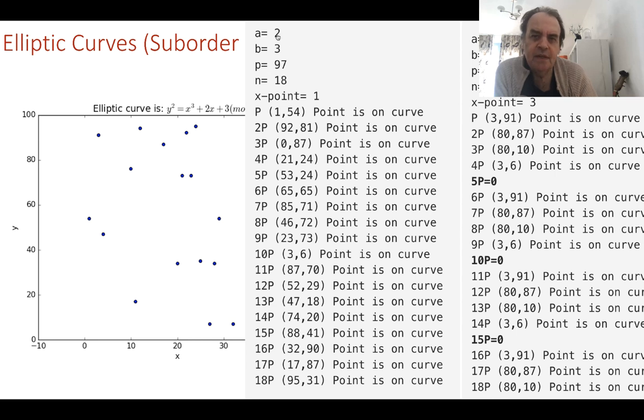If we pick another point, such as x equals one, that's 154, this point here, then it's much better, and we can see here it is now generating more points as we keep adding the value of G.